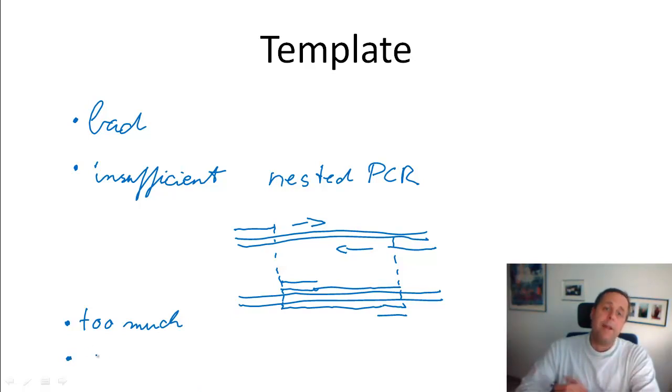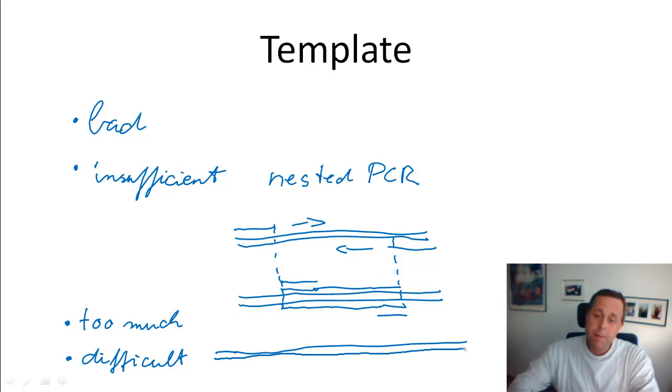And finally, it can happen that your template is simply a difficult template. What's a difficult template? Well, maybe it's clean DNA, sufficient amounts, but not too much. However, what happens is that perhaps in your template DNA, you might have a GC region.